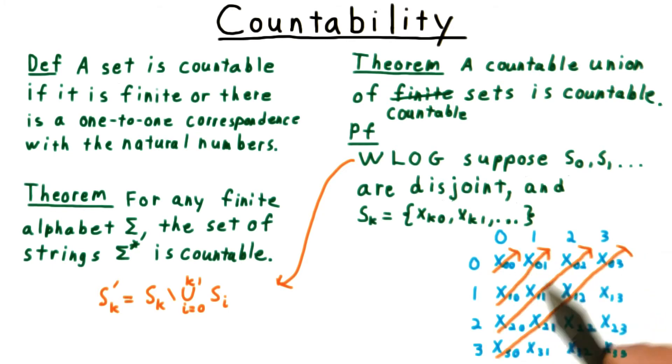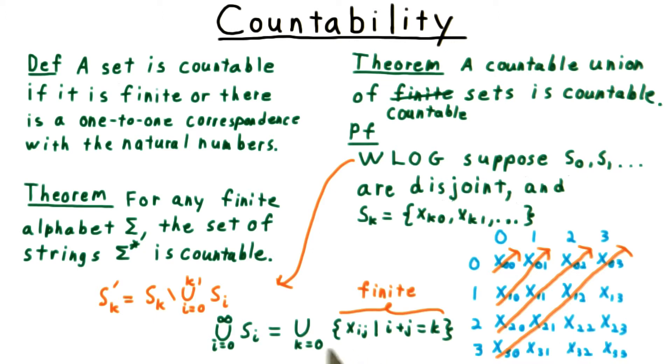The union of all the S_k is the union of all the rows. But it's also the same thing as the union of all the diagonals.